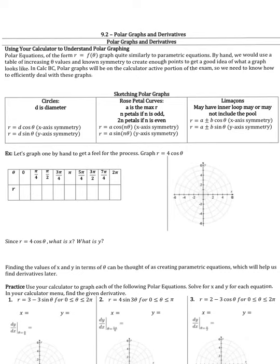Section 9.2 is about polar graphs and derivatives. We've reviewed polar coordinates, where every coordinate is r comma theta, and we've talked about conversions back to rectangular. In this lesson we're going to focus on how to graph a polar function in polar, how to translate it into a rectangular equation, and how to take the derivative of a polar function — which ties right back to parametric equations.